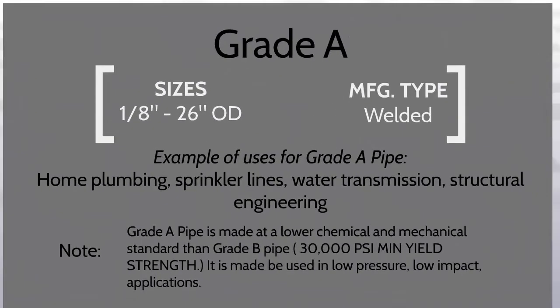Grade A includes 1-1/8 inch to 26 OD welded pipe. Grade A pipe can be used for home plumbing, sprinkler lines, water transmission, and structural engineering. Grade A pipe is made at a lower chemical and mechanical standard than grade B pipe. It is made to be used in low pressure, low impact applications.